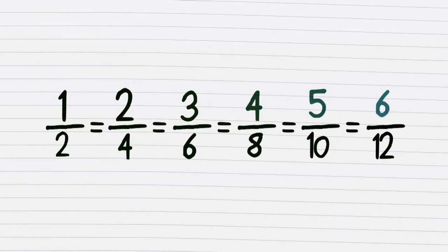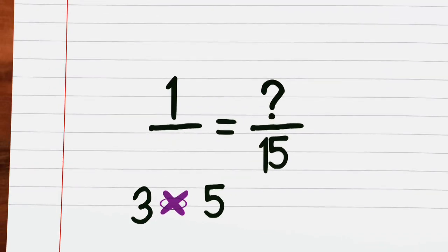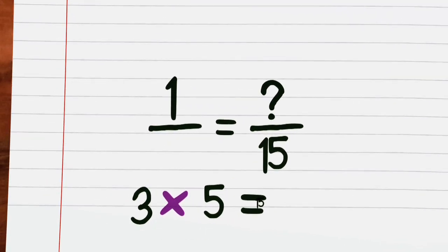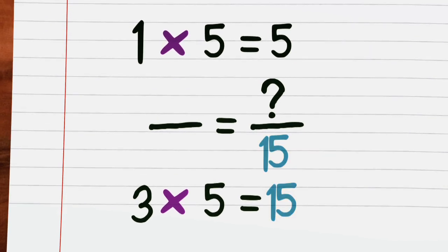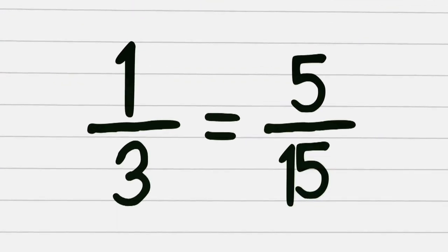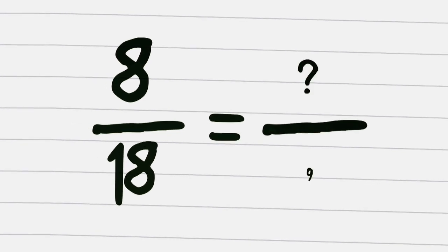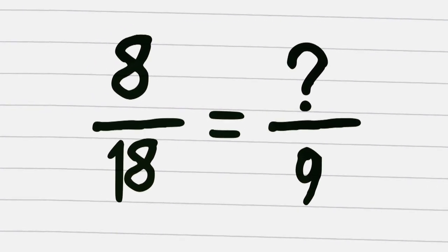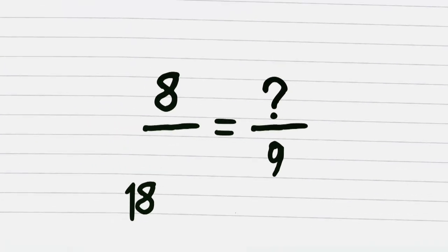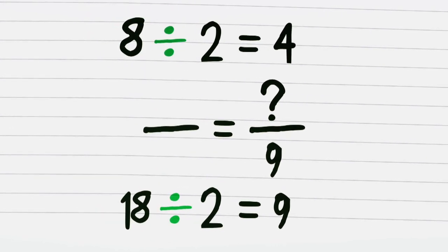Now if someone asks to see what one over three as a portion in fifteenths might really be — we can see that fifteen is five lots of three, so the numerator's five lots of one, you see? And eight over eighteen is something over nine. Whatever's done to the bottom, do it to the top side. So from eighteen to nine, we use two to divide, so eight divided by two — we'll put a four on the line.